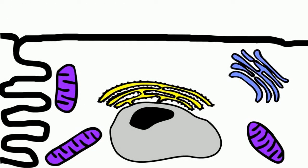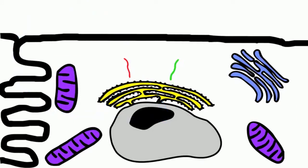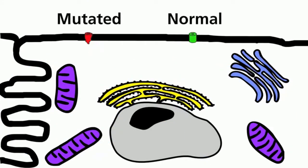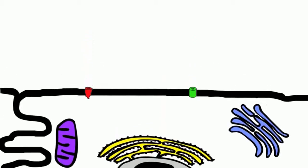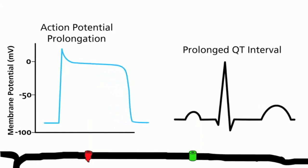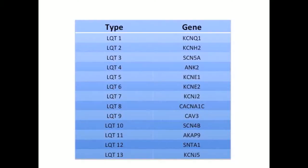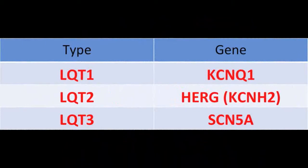In LQTS there is a mutation in one of the genes encoding for one of the ion channels required for action potential generation. A single nucleotide substitution in the DNA can change the amino acid sequence of the protein, which in turn alters the structure of the ion channel, resulting in the production of a mutated product. The abnormal ion channel may result in reduced expression on the cell membrane or a gain or loss of function. This leads to prolongation of the action potential, seen on the ECG as a prolonged QT interval. There are at least 10 genes involved in Long QT Syndrome, but mutations in three of these channels account for over 90% of known causes.